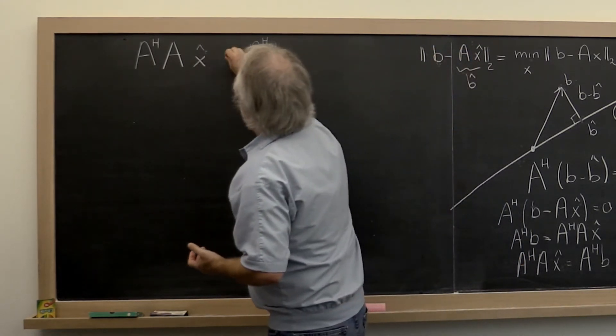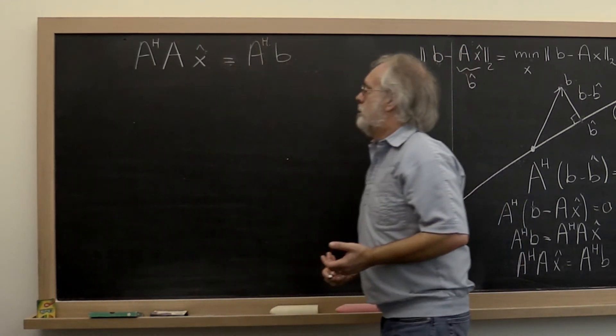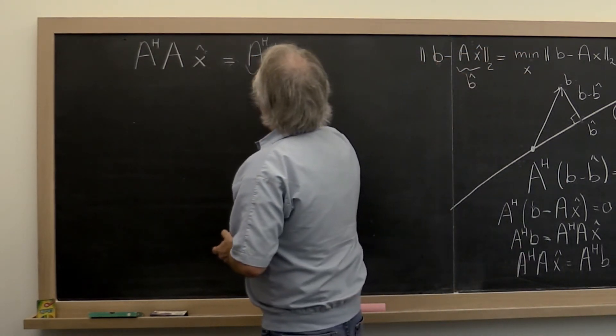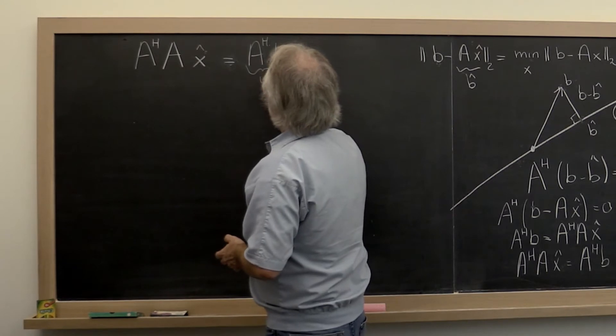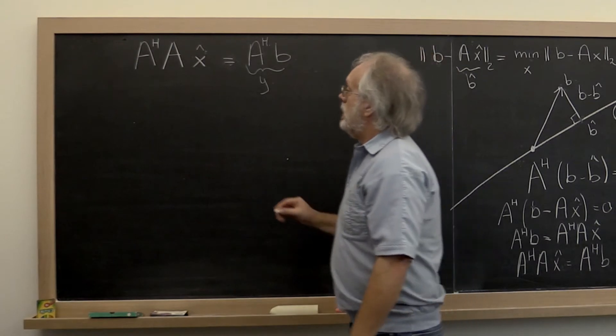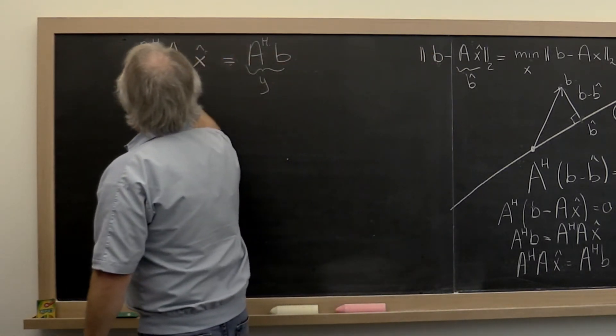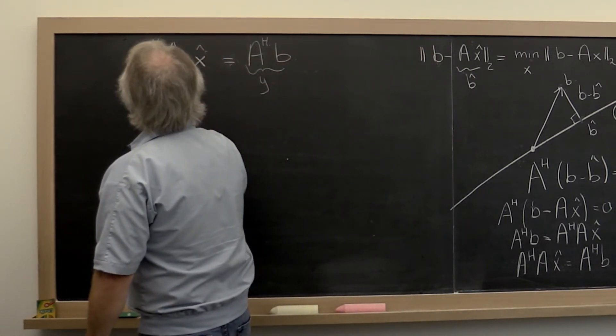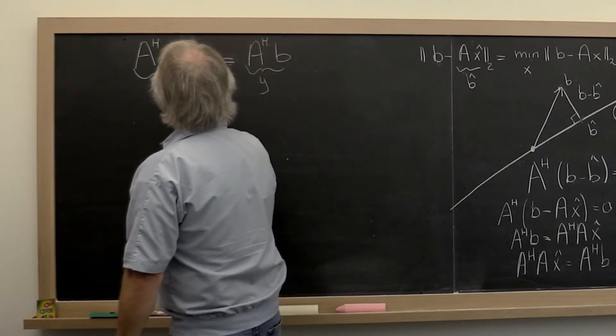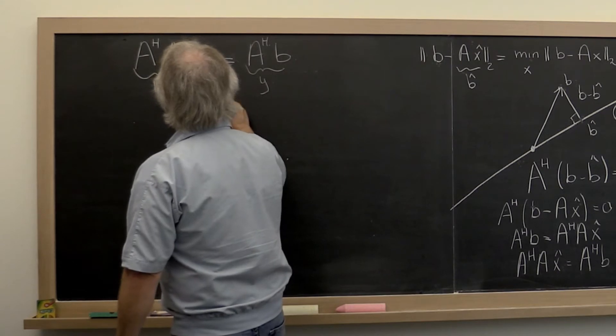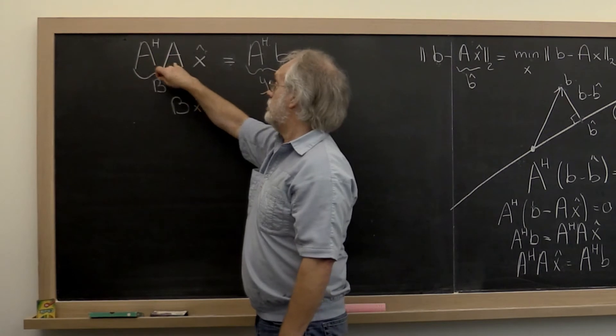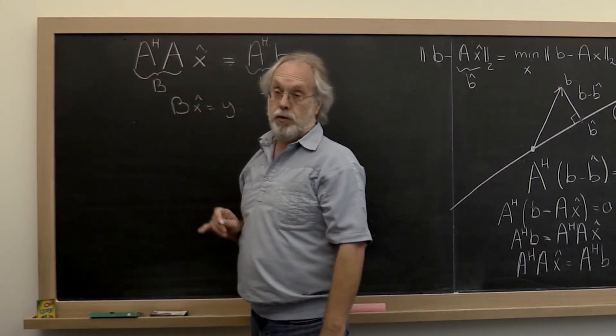And notice that this now becomes an equality. Well, one way you could do that is to say we'll compute this vector right here, y. That's a matrix vector multiply. And we compute this matrix right here, B. And then what we're left with is having to solve B times x hat is equal to y. And notice that B is now a square matrix because A Hermitian transpose times A gives you a square matrix.